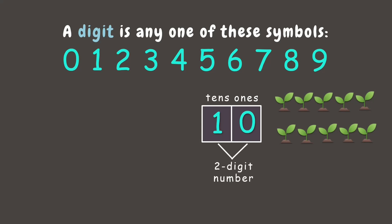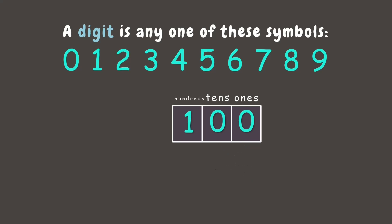As we keep counting, we eventually reach 99. Adding one more brings us to 100. We now have the third place, which is the hundreds place, and it has three digits.